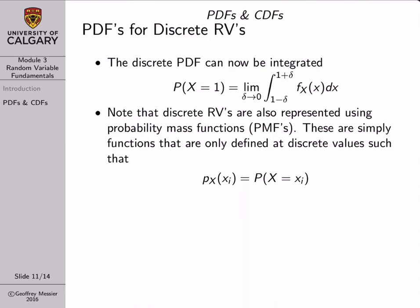For our coin toss random variable, this is what the PDF would look like — we have two delta functions: the first centered at zero, the second centered at one. These delta functions have infinite height. The numbers I write beside them indicate that their weight or area is equal to 0.5 — not that their height is 0.5. So if we use delta functions, our integration works. For example, if we want to figure out the probability that our coin toss random variable is equal to one, we integrate from one minus a very small value to one plus a very small value, take the limit as that value approaches zero, and our result is equal to one half.